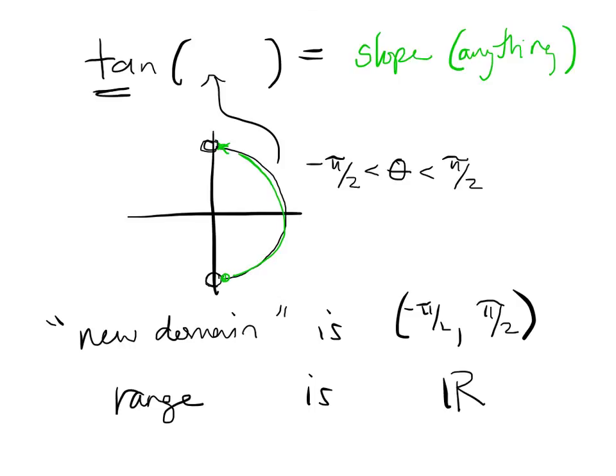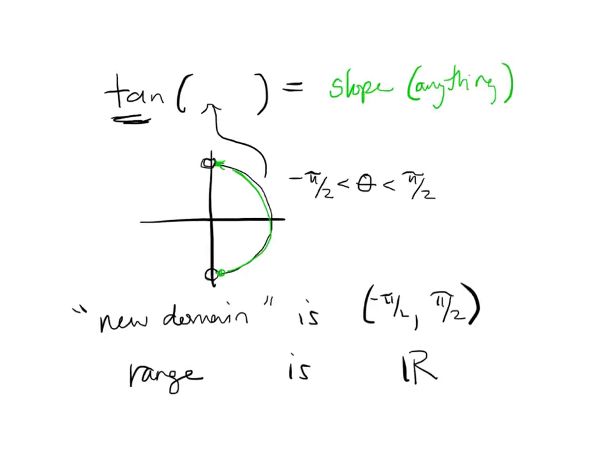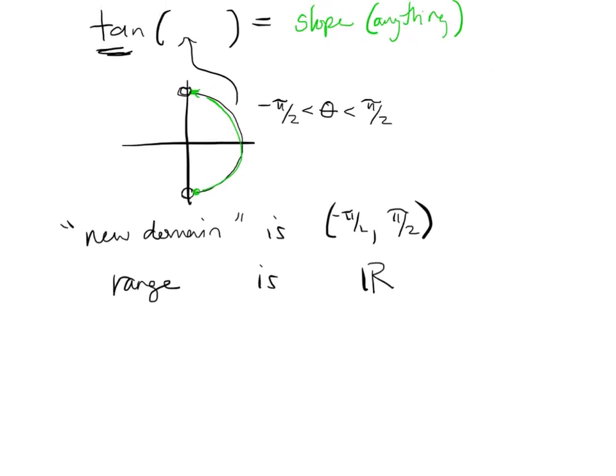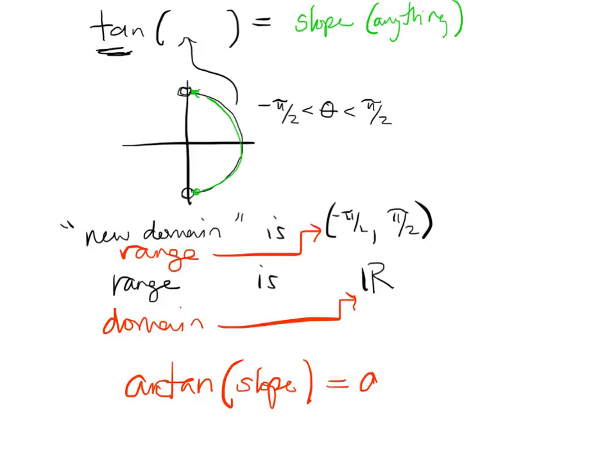That's for tangent. Tangent. Okay. Okay, arc tangent just trades these. Okay. So, arc tangent has domain of all real numbers. Of all real numbers. And it has range, negative pi over two to pi over two. Right. So, arc tangent of a slope gives an angle. Okay. Now, this is really important mentally.